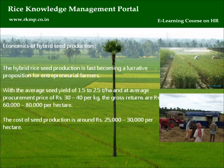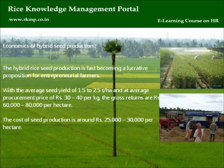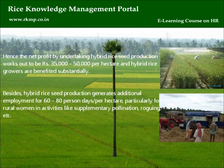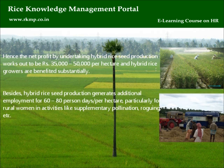Economics of Hybrid Seed Production: Hybrid rice seed production is fast becoming a lucrative proposition for entrepreneurial farmers. With an average seed yield of 1.5 to 2.5 tonnes per hectare at an average procurement price of Rs. 30 to 40 per kg, the gross returns are Rs. 60,000 to Rs. 80,000 per hectare. The cost of seed production is around Rs. 25,000 to Rs. 30,000 per hectare; hence, the net profit works out to Rs. 35,000 to Rs. 50,000 per hectare. Additionally, hybrid rice seed production generates 60 to 80 additional employment days per hectare, particularly for rural women in activities like supplementary pollination, roguing, etc.